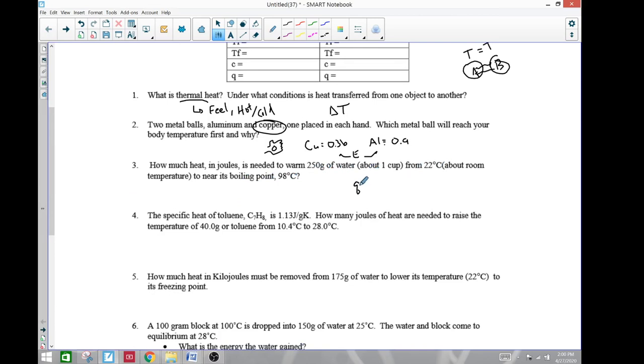So Q equals mass times change in temperature times the specific heat. We're looking for Q. It equals 250 times the change in temperature, so it's going to be 98 minus 22, times water which is 4.18. Let's do the math. Order of operations here says 98 minus 22 equals 76 times 250 times 4.18 equals 79,420 joules.